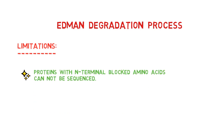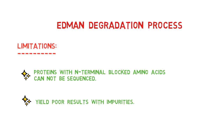Let us go over some of the process's limitations. Proteins that have blocked N-terminal amino acids cannot be sequenced through Edman Degradation. There are unmodified CYS and glycosylated residues that give a blank cycle. Poor results are also obtained when impurities, such as amine-containing chemicals, interfere with Edman's reaction.